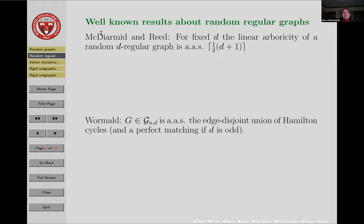For random regular graphs: an interesting theorem by McDiarmid and Reed says that for fixed d, the linear arboricity of a random d-regular graph is asymptotically almost surely the ceiling of (d+1)/2. So if we look at a random 4-regular graph, that ceiling would be ceiling of 5/2, which equals 3. So we could asymptotically almost surely decompose the edge set into three paths.